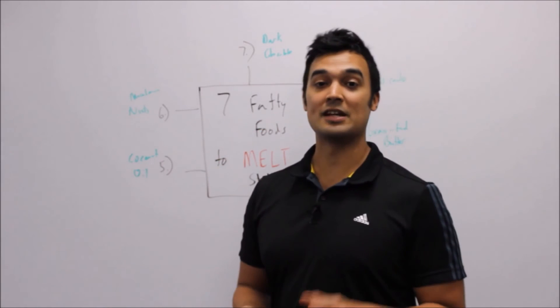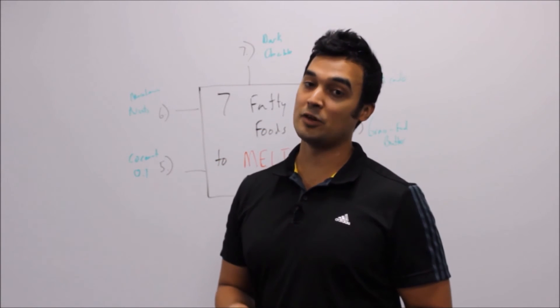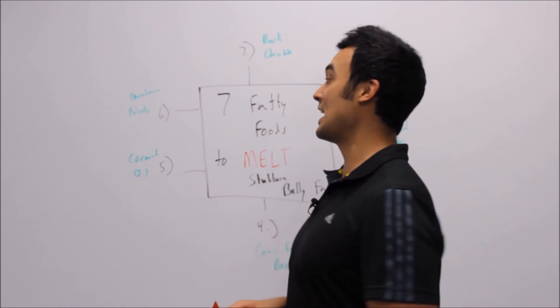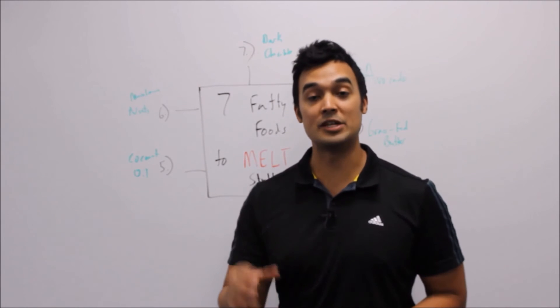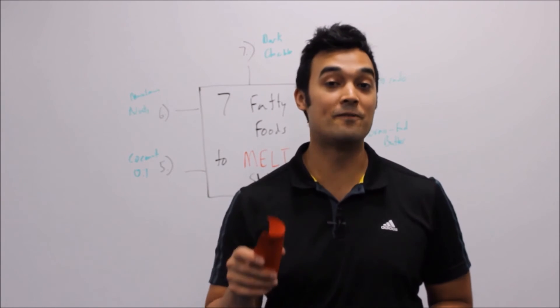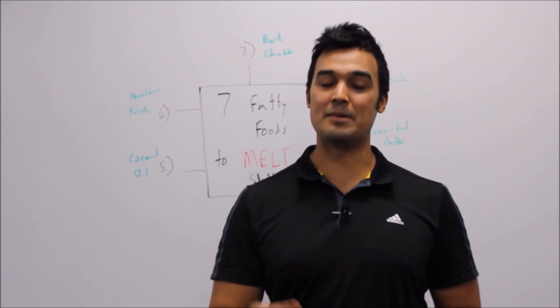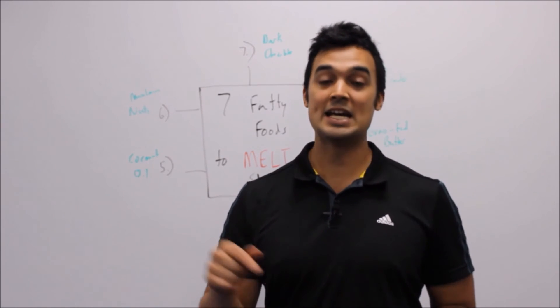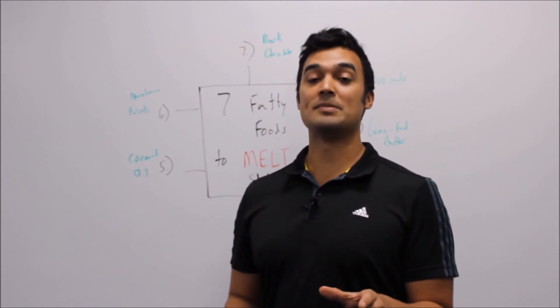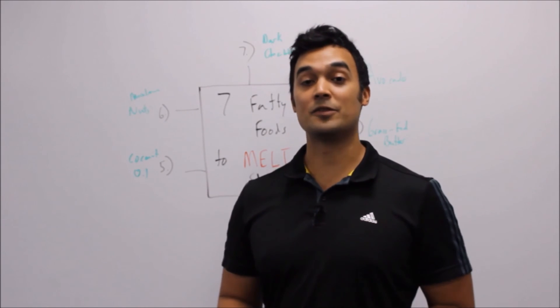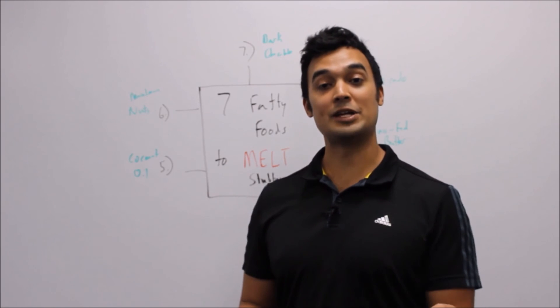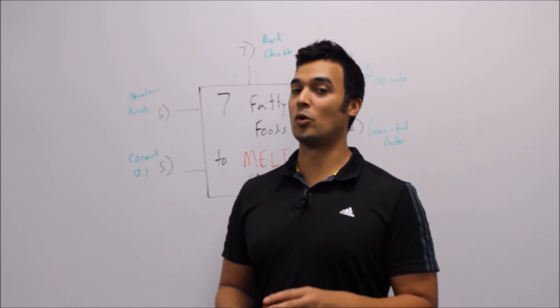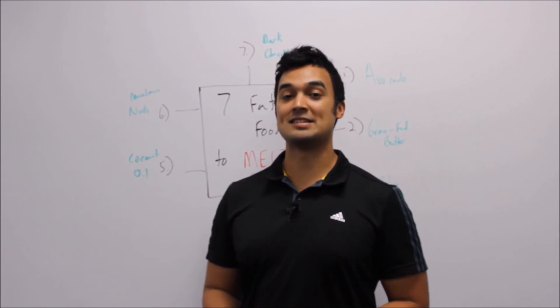So those are the seven fatty foods that are going to help you melt stubborn fat off your body. If you have any questions, comment below this video and I'll reply as soon as I can. Again, I'd love for you to have access to my free video training series, How to Outsmart Your Fat Cells to Unleash the Power of Your Female Metabolism. In the first video, I go over seven key differences between a fat storing body and a fat burning body. You don't want to miss this video. Click the link to sign up for the free video training series. I'll also give you free exercise videos, free meal plans, and lots of other cool stuff that you don't want to miss. Click the link, sign up for the video training series, and I'll see you inside.